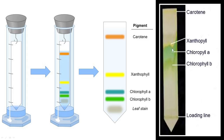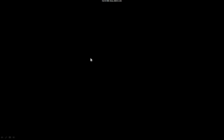We just have to separate the plant pigments — that's it — to demonstrate that a plant contains different pigments in its leaves. So this is the paper chromatography method. Thank you.